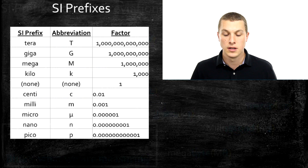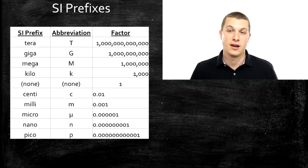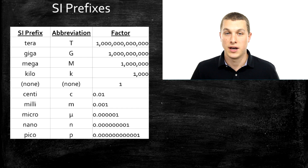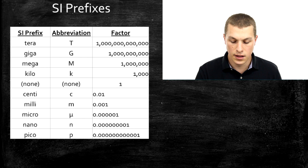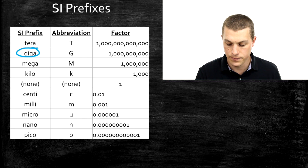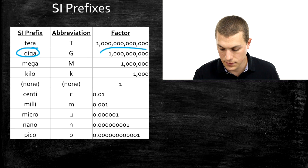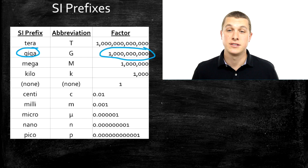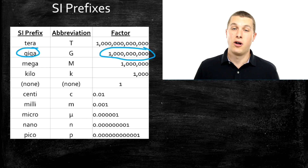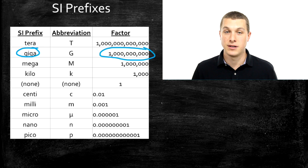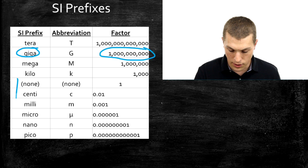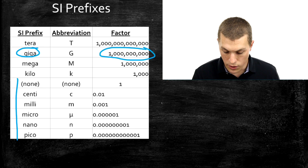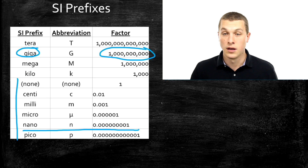Here is a table of all the different SI prefixes and what we're calling a factor — just what you'd be multiplying something by if you put that SI prefix in front of it. SI prefixes at the top of the list make things bigger: a trillion, a billion, a million. SI prefixes at the bottom make things smaller. For example, nano means a billionth, so a nanosecond is a billionth of a second.